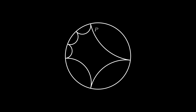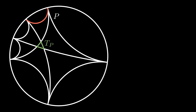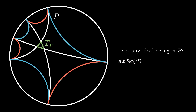Now let's consider an ideal hexagon. If we connect the opposite sides of this hexagon, a triangle appears in the middle — let's call this triangle tp. We now prove the following equality: for any ideal hexagon, the absolute value of the alternating perimeter is exactly twice the perimeter of tp.